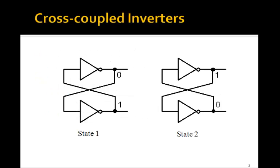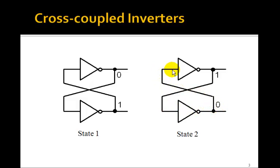Consider these two cross-coupled inverters. Suppose this output is 0, then this output will be 1. If this input is 1, then this output is 0. So this is a stable state — we call it state 1. Now suppose this output was 1, then this output would be 0 for this inverter. With input 0, the output is 1. So this is a second stable state. The output of the top inverter could either be 0 or 1. However, there's no easy way to get data in and out of here.